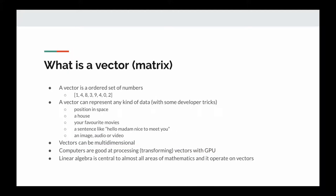Before going into more details of deep neural networks, let's pause and see what a vector is and how it is important in computation. A vector is an ordered set of numbers — the order matters. With a vector you can represent any kind of data: a position in space, or you can describe a house. For example, in a CSV file representing multiple houses, each column specifies different features like number of rooms, number of floors, square footage, longitude, latitude, price, etc. You just represent them with numbers — that's how you vectorize a house.